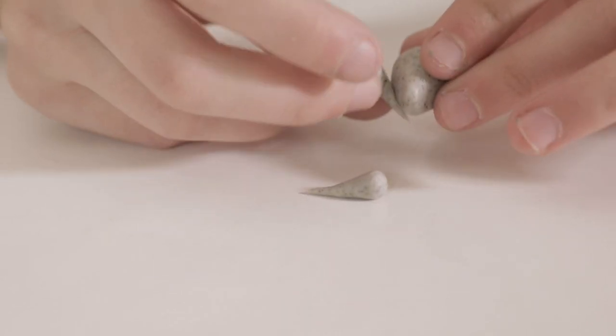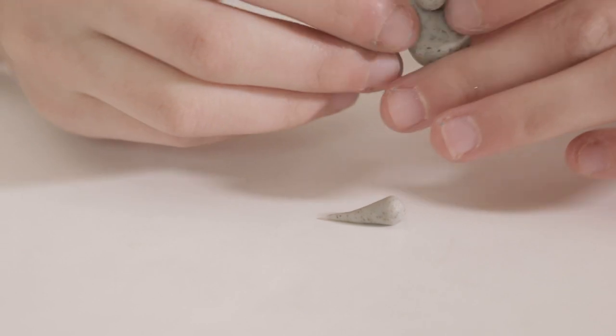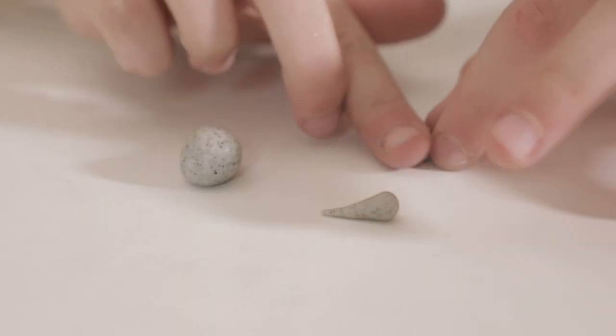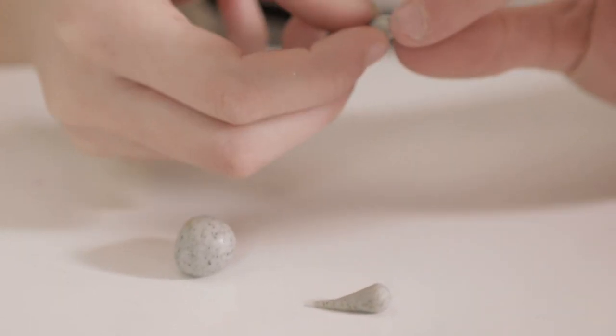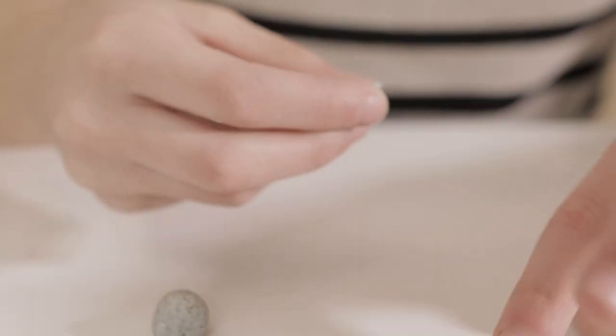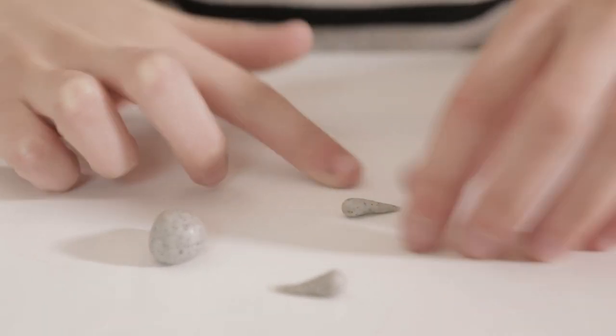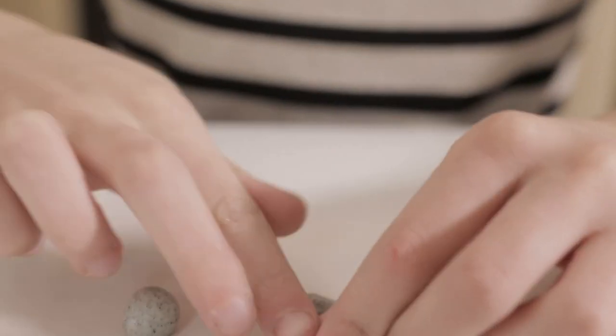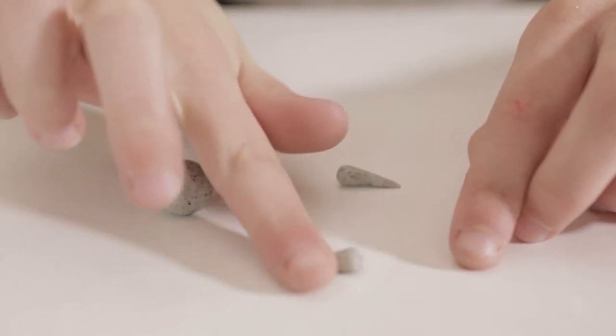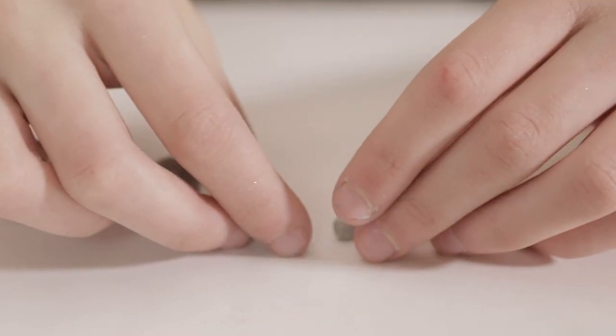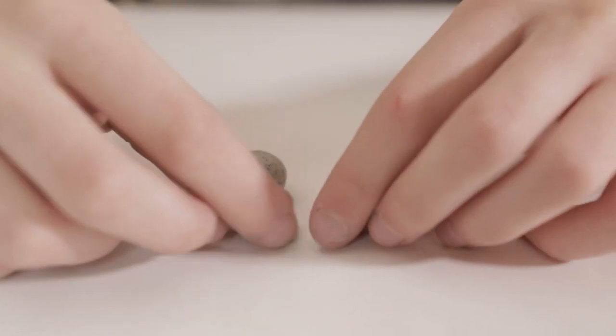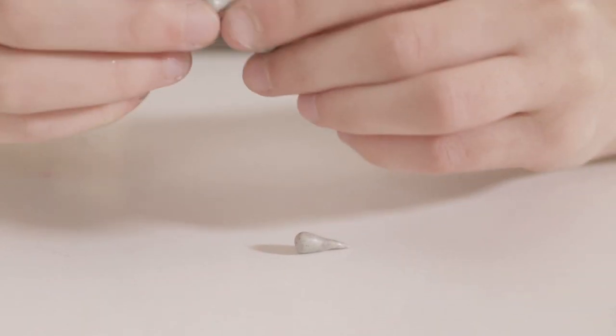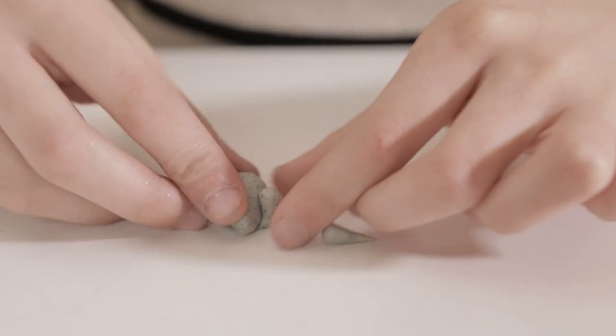Make sure you have your body to measure how big you want the legs. My paws are a little too big, so what you do if it's too big is rip off the end and roll it out again. I like to attach it on from the back.